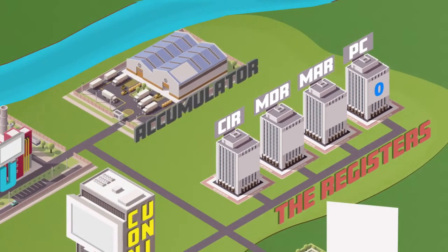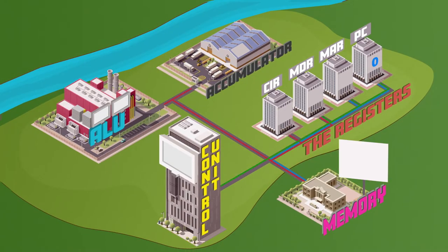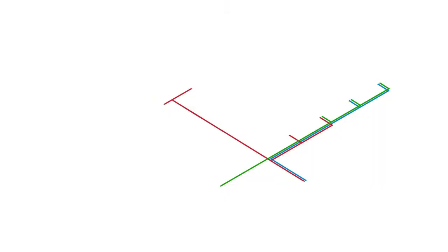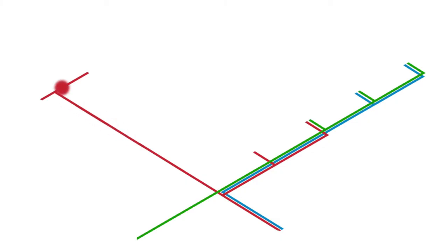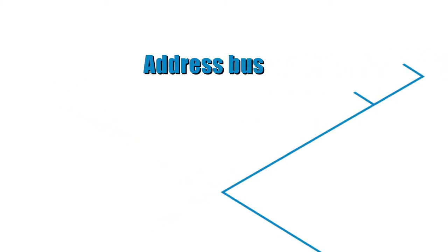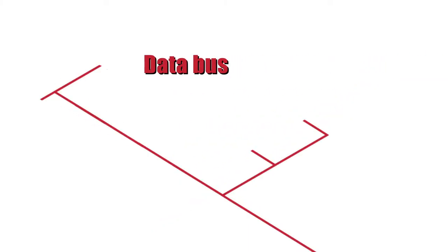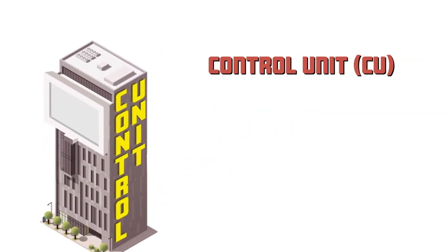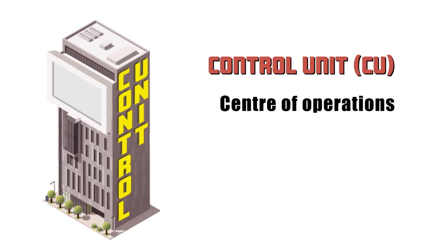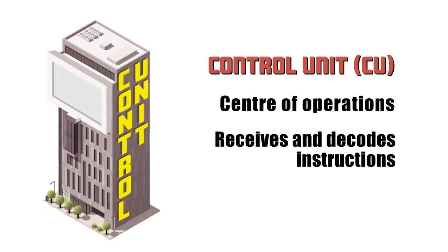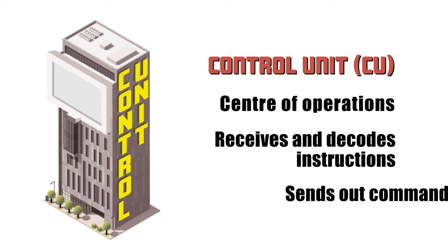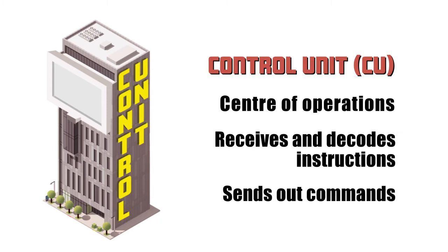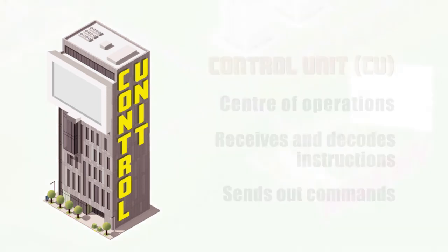The first register to get going is called the program counter. As you can see, it's set to zero, which represents an address. We also need to know how information moves around the city. These pathways are called buses — they carry digital signals around CPU City. There are different types of buses and each type has a different purpose: the address bus carries addresses, the data bus carries data, and the control bus carries control instructions issued by the control unit, which is the center of operations. It receives and decodes instructions, then sends out commands to the other components to get those instructions executed.